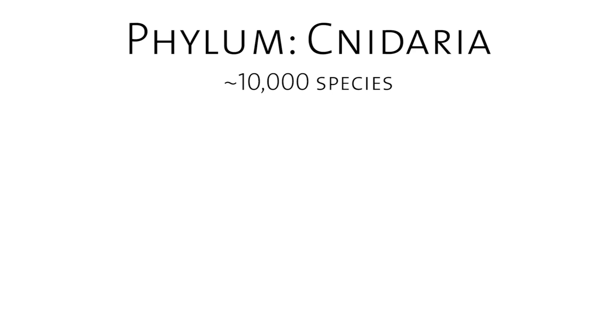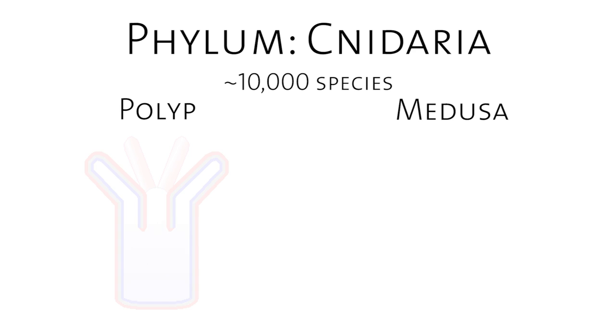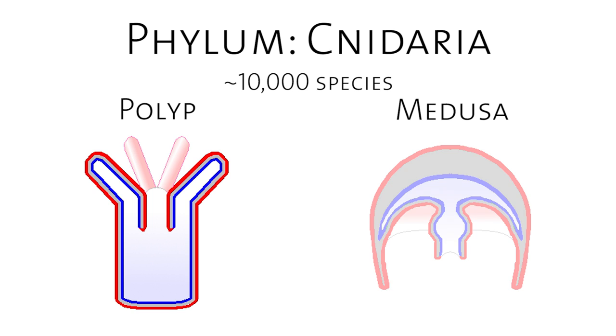Another very characteristic thing about these animals is that they have alternation of generations, which means that during their lifetime they go through two different life forms. They can be a polyp or a medusae. The polyp lives on the sea floor — they are basically anchored there.